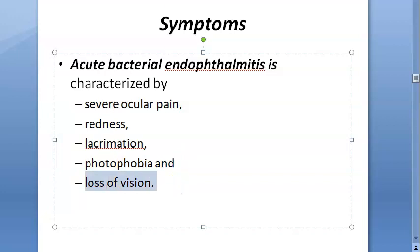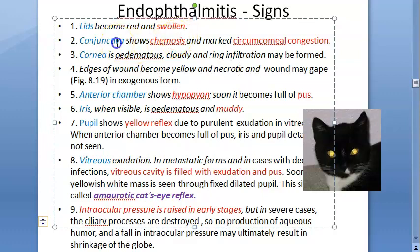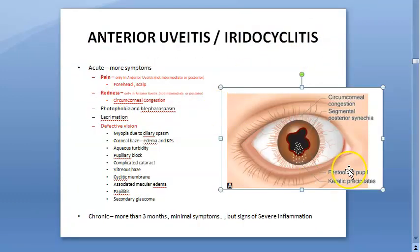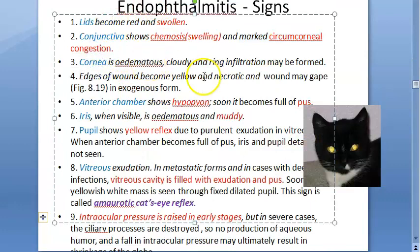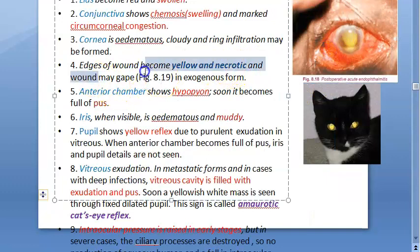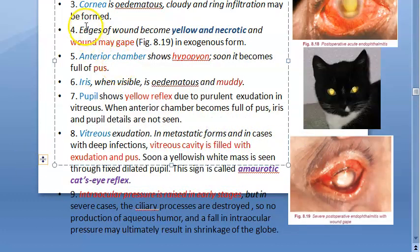Signs include swollen, red eyelids and conjunctival chemosis (swelling/edema). There is marked circumcorneal congestion. The cornea becomes edematous and cloudy with ring infiltration. Edges of the wound may become yellow and necrotic, and in the exogenous form the wound may gape — the wound edges are visibly separated.